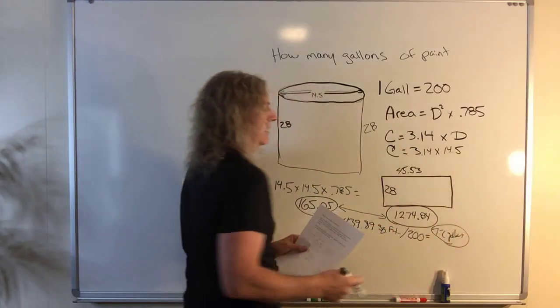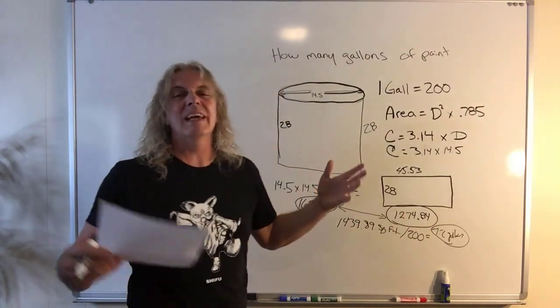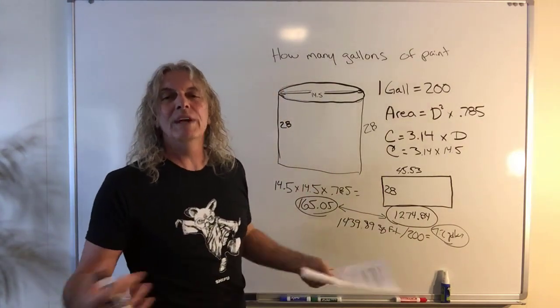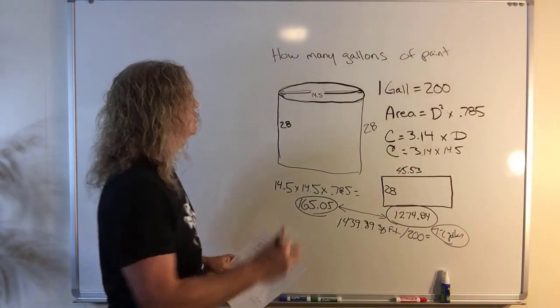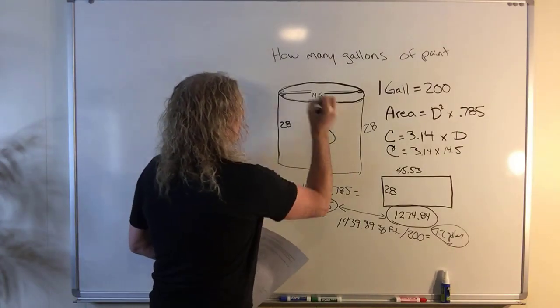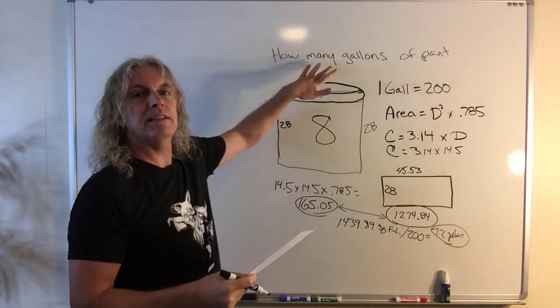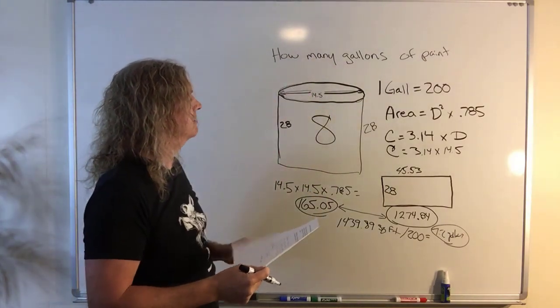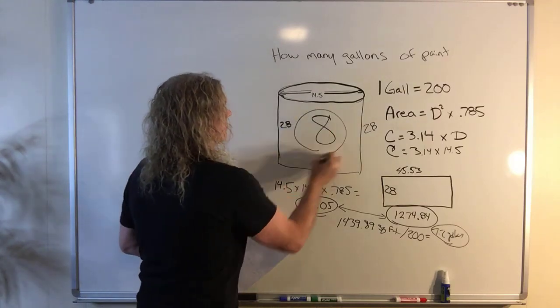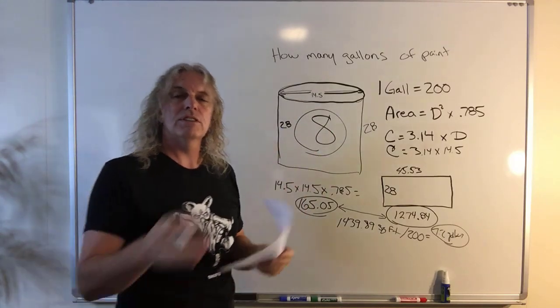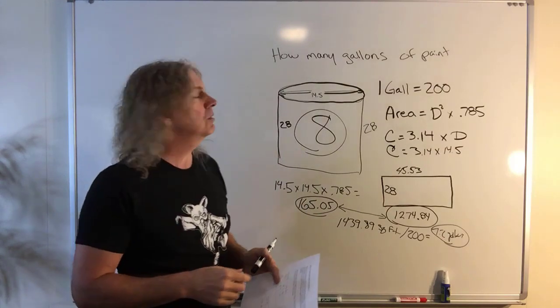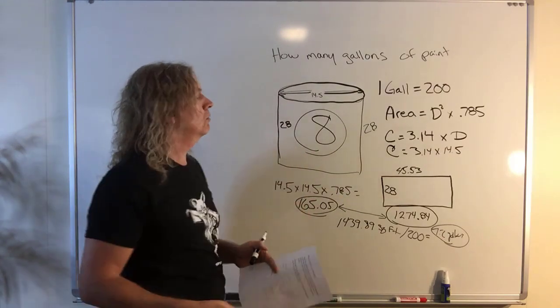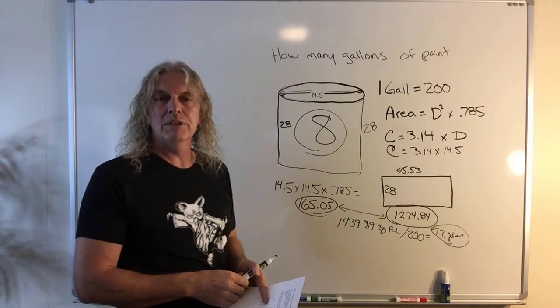7.2 gallons. But since you can't buy 0.2 gallons, you have to buy the next size up. So your answer to this question, how many gallons of paint does it take to cover the outside and top of that tank? 8 gallons. Again, this is something that you'll see on the lower level distribution exams. If you're taking those, make sure you're somewhat familiar with it. And I hope that helped. It's nice putting something together for you guys. It's been a little while. Have a good day.